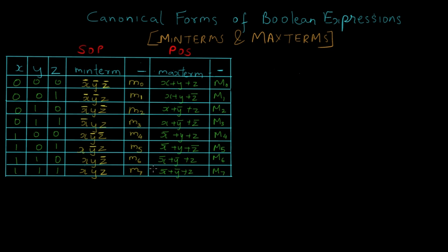So what are these canonical forms of boolean expressions? There are two forms: min terms and max terms. Min terms are essentially SOPs and max terms are product of sums, that is POS. Any boolean function can be expressed as a sum of products, that is min terms, or product of sums, that is max terms.